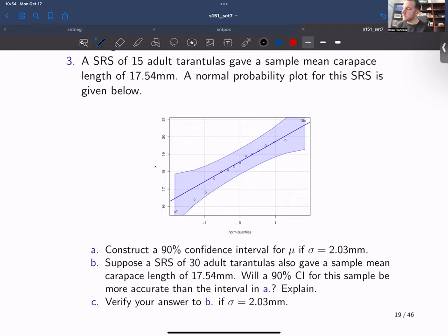So what is the situation? We have a simple random sample of 15 adult tarantulas gave a sample mean carapace length of 17.54 millimeters. A normal probability plot for this SRS is given below.